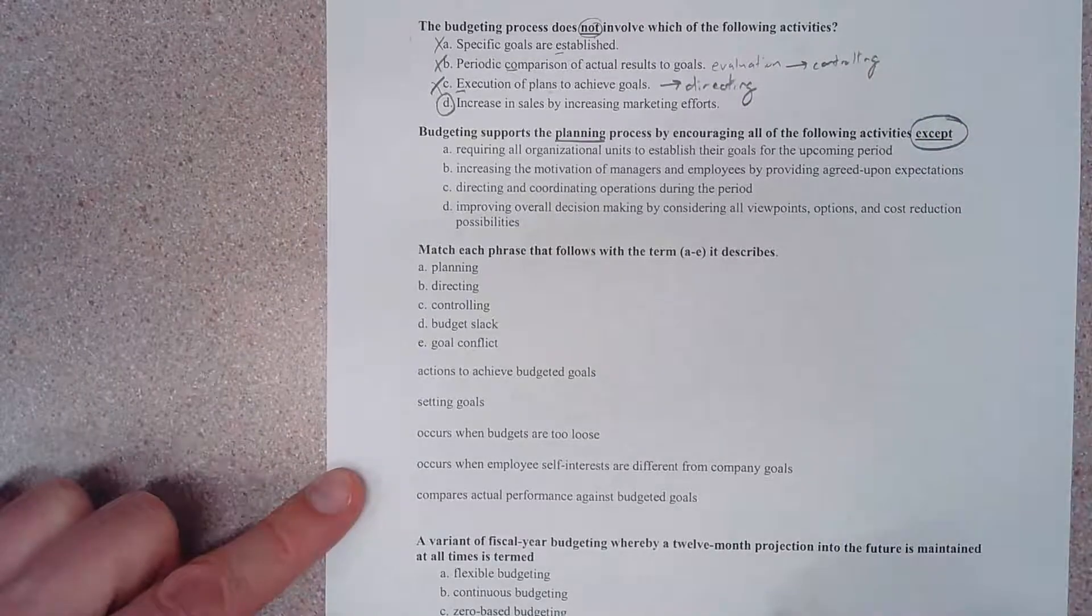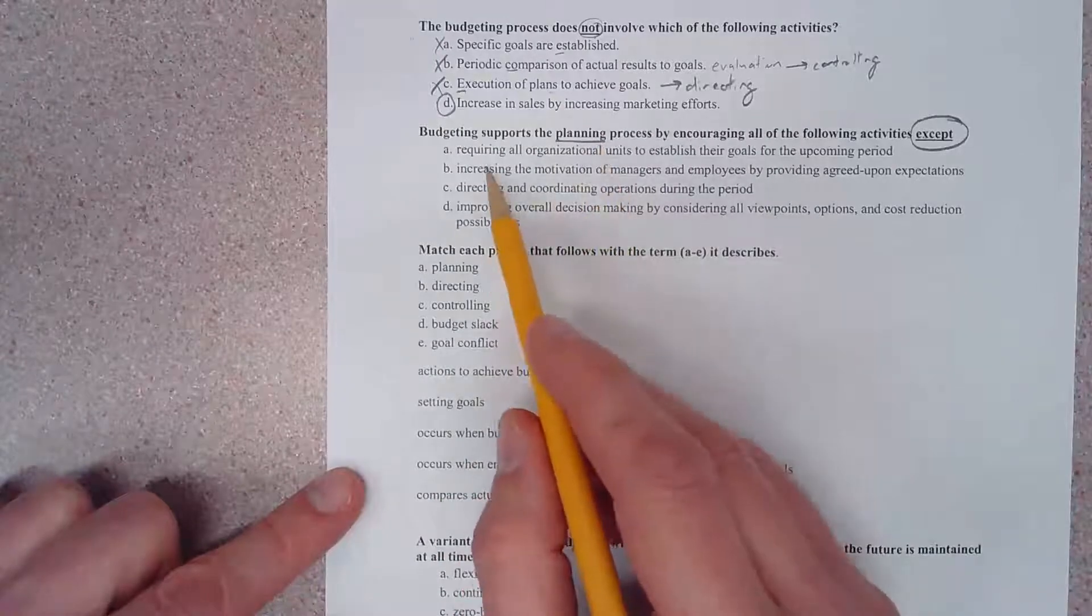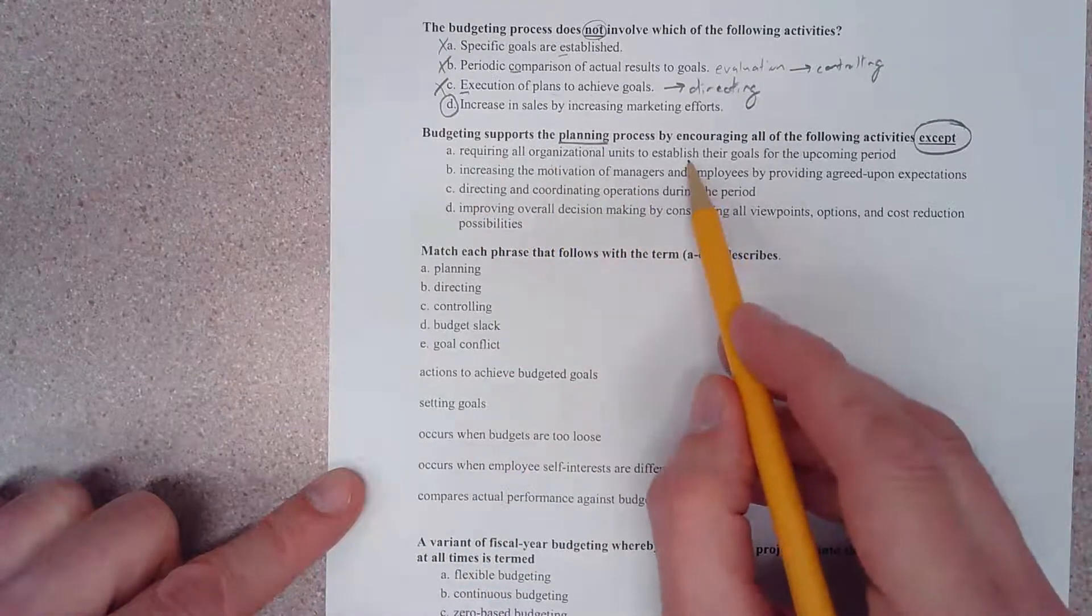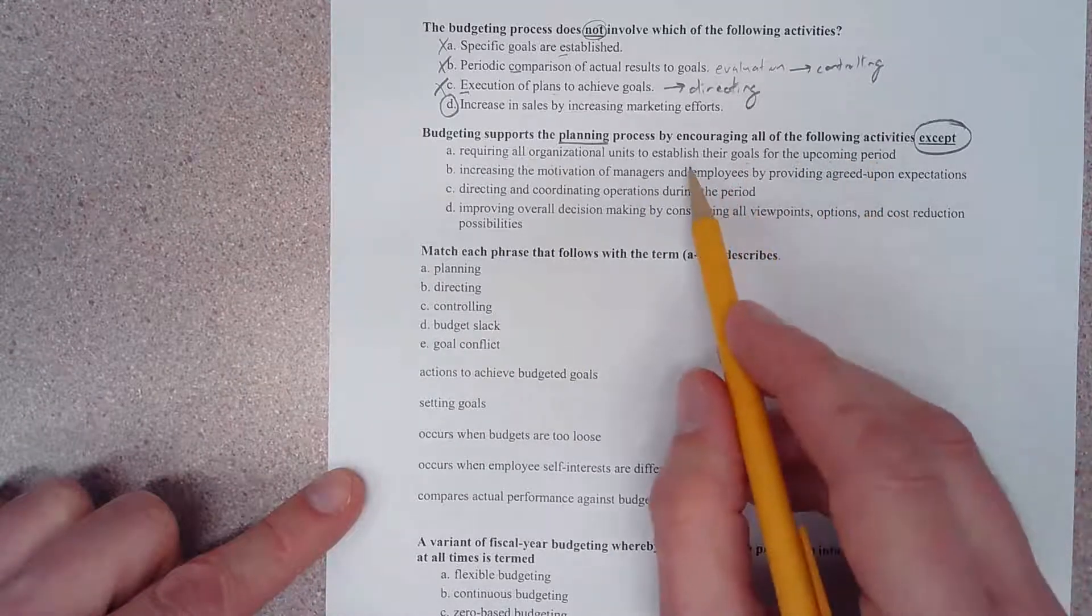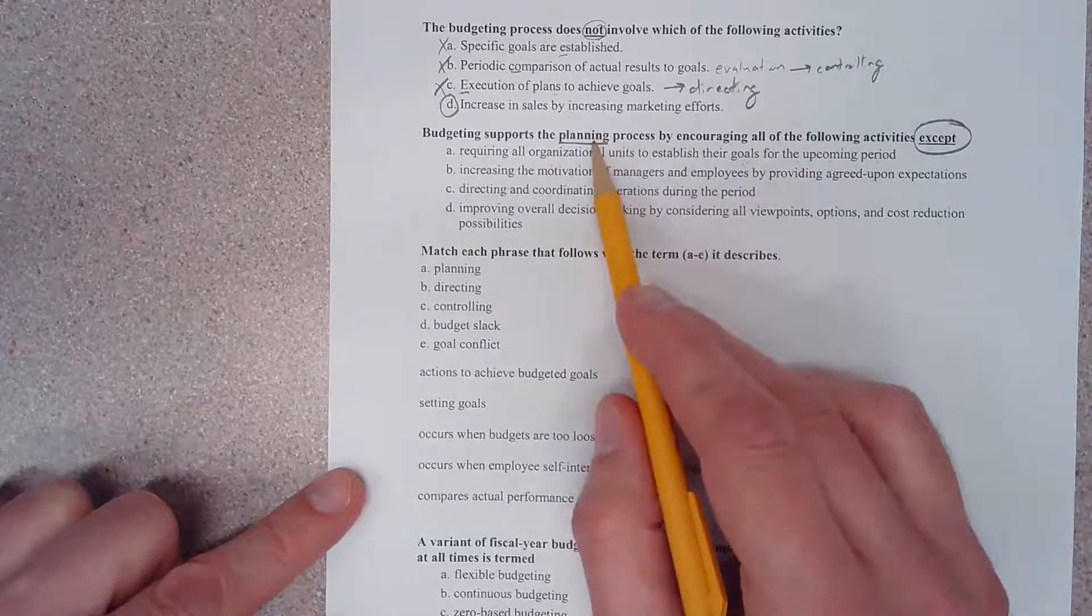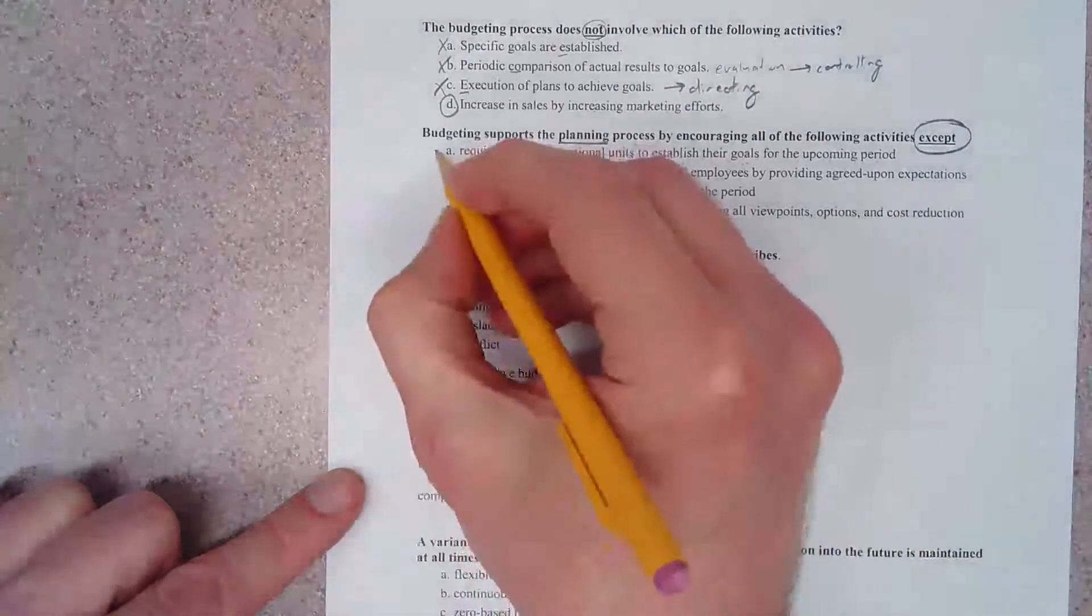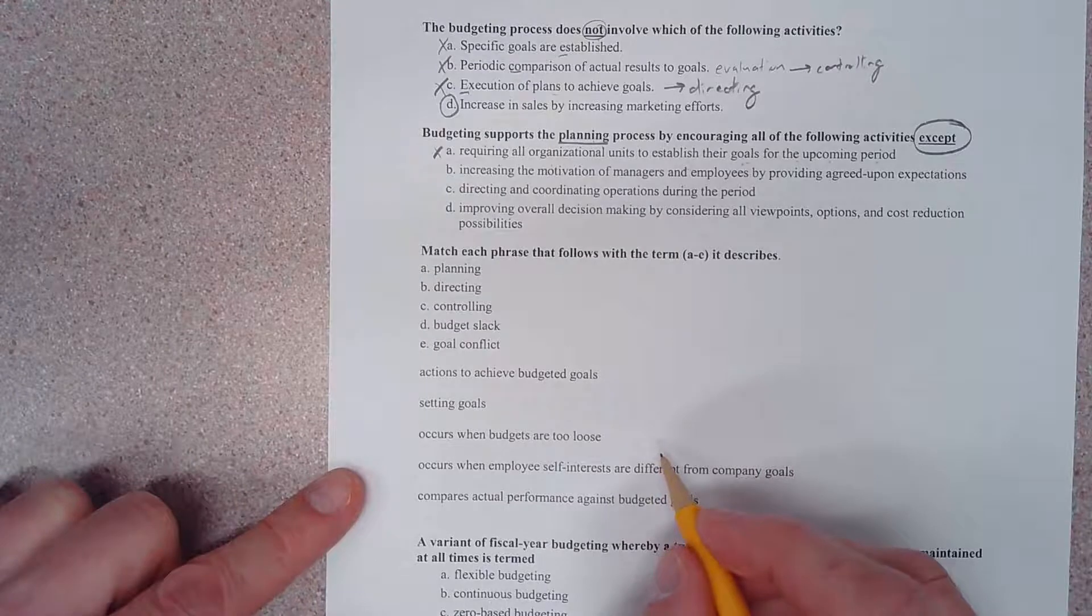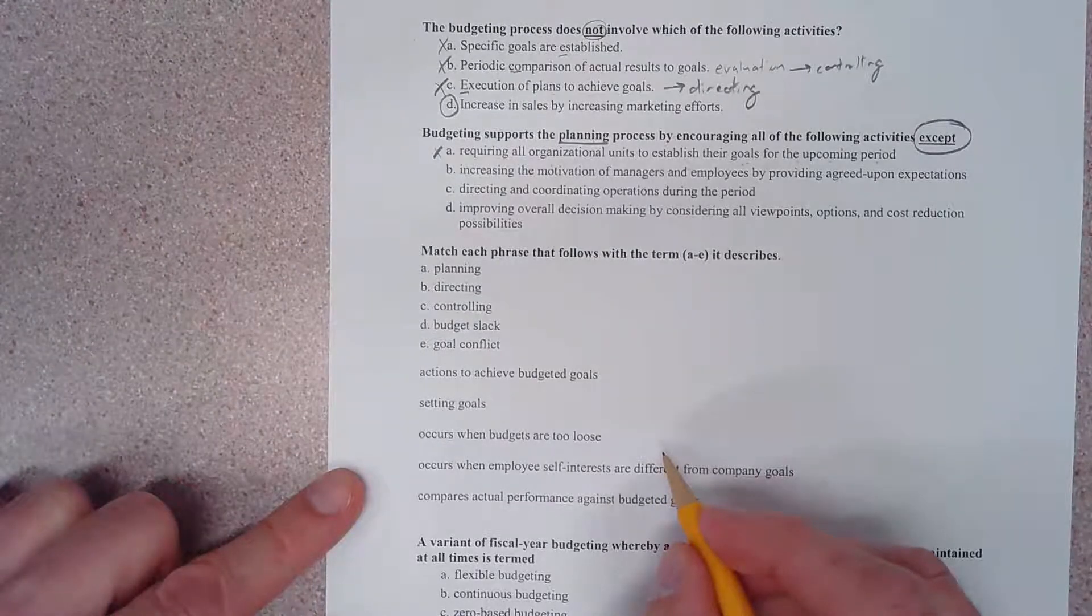Let's look at the second one. It says budgeting supports the planning process by encouraging all of the following activities - another one of these except type questions. Planning requiring all organizational units to establish their goals for the upcoming period. Well, establishing goals is definitely a part of planning. They're asking for except, so this is an incorrect answer because choice A is definitely a part of the planning process.